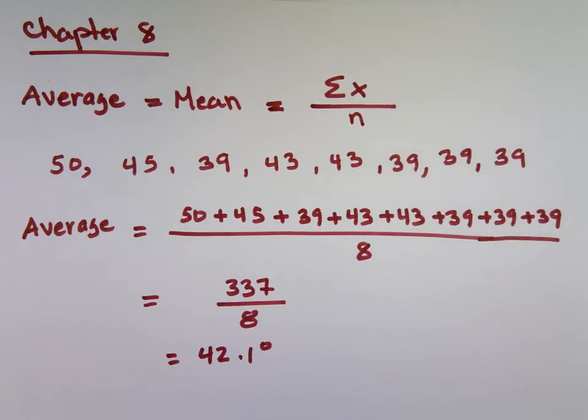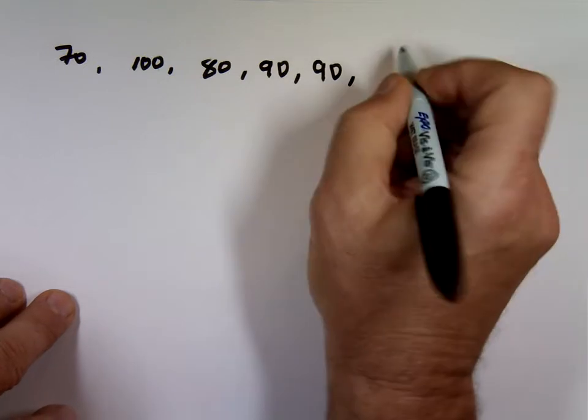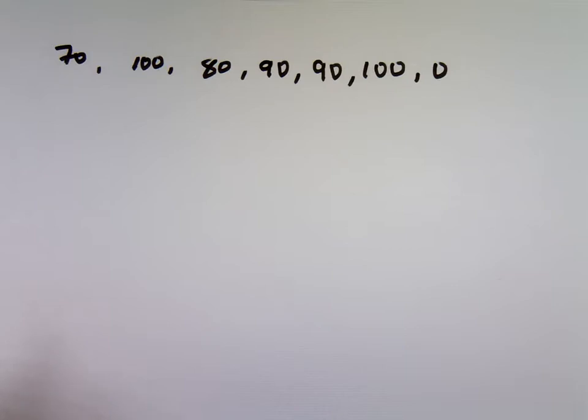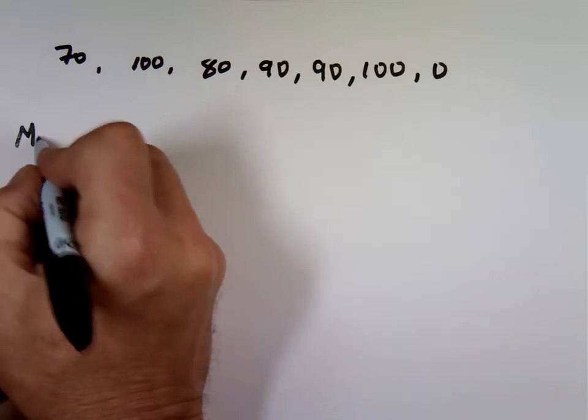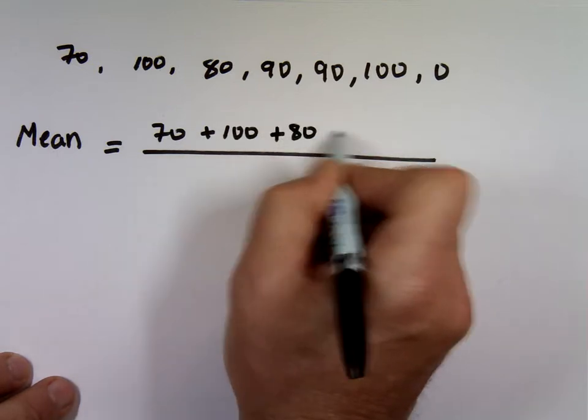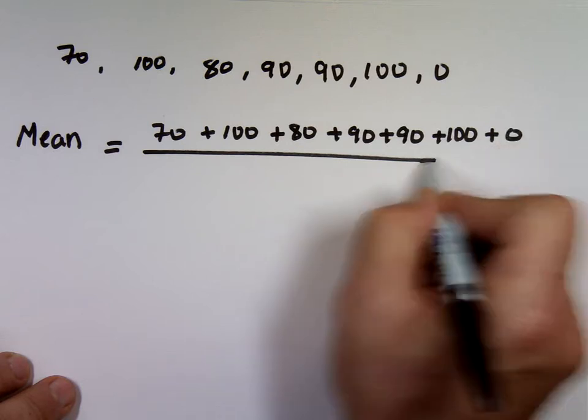I'll do another example for the average. Let's assume these are, we had so far, how many quizzes? Seven that you completed. And these are your scores: 70, 100, 80, 90, 90, 100, and zero. You didn't take the last one. You missed it. We gave you a zero.